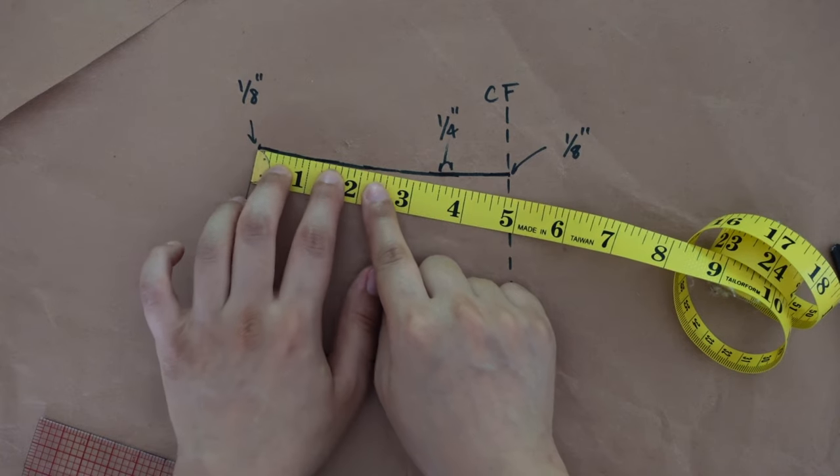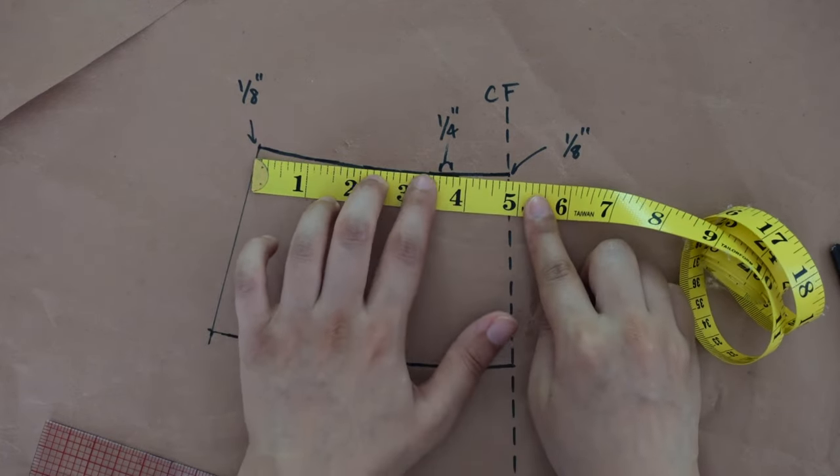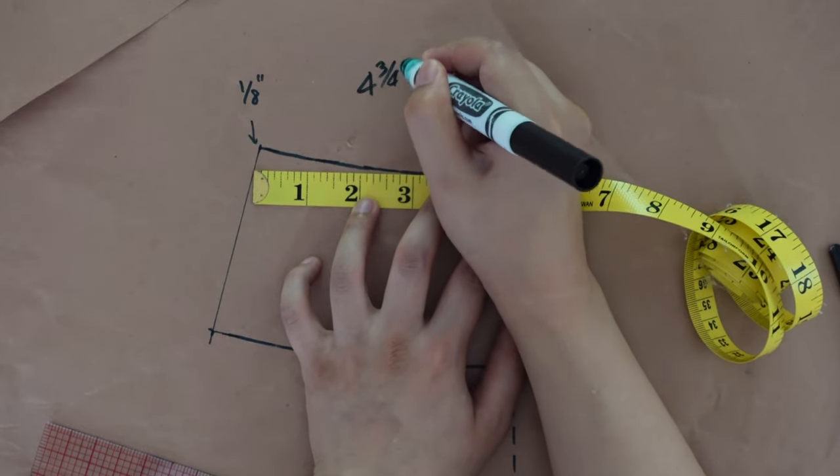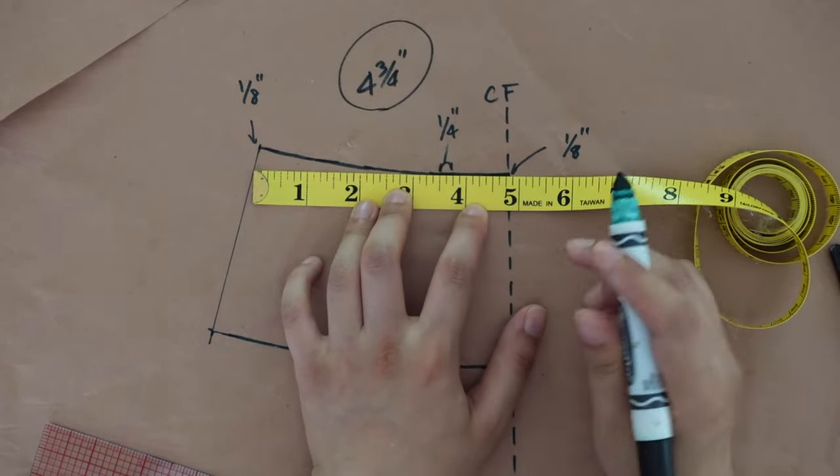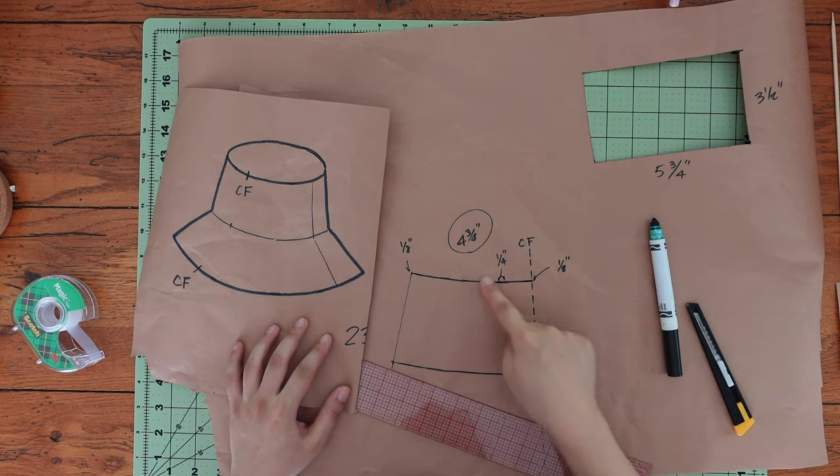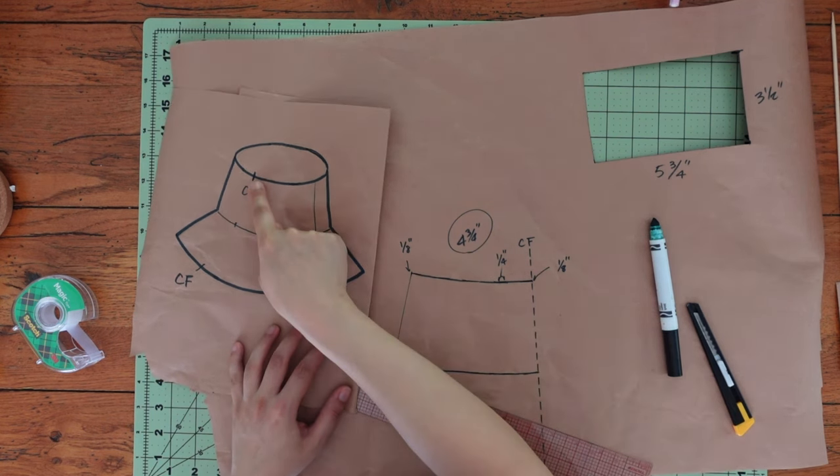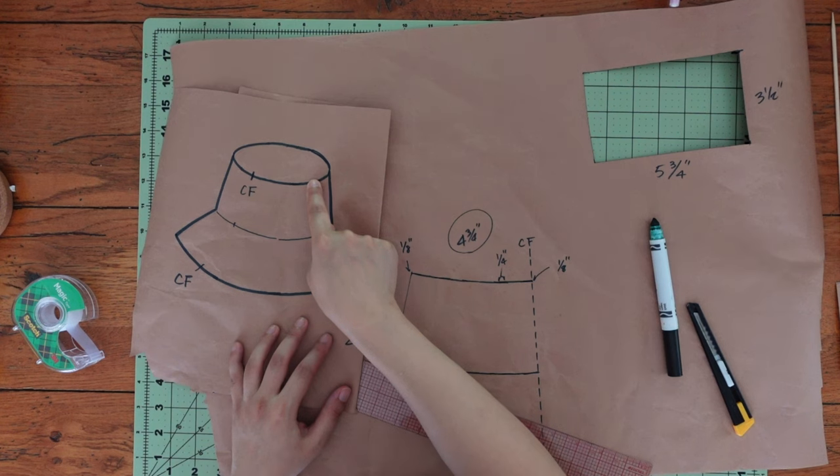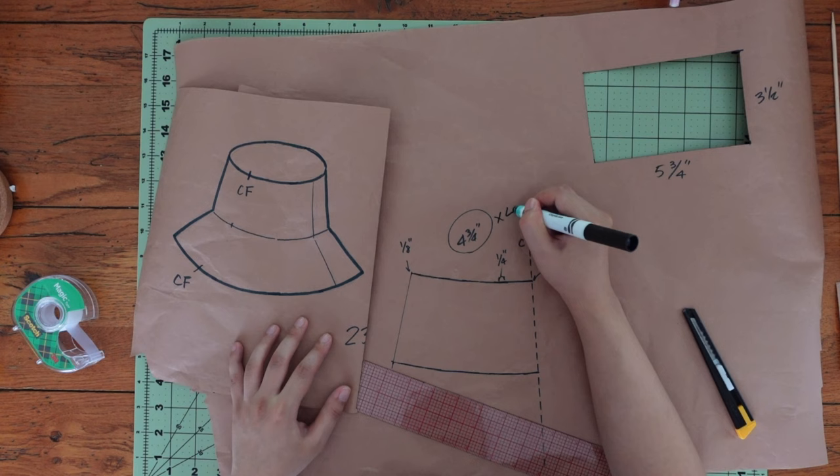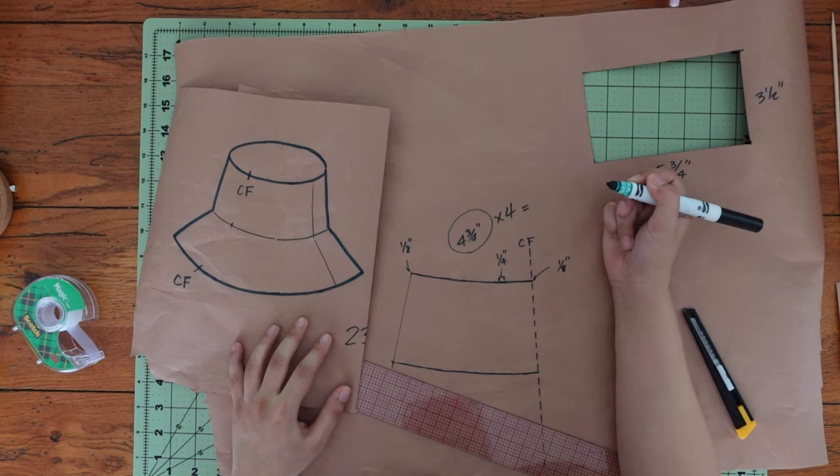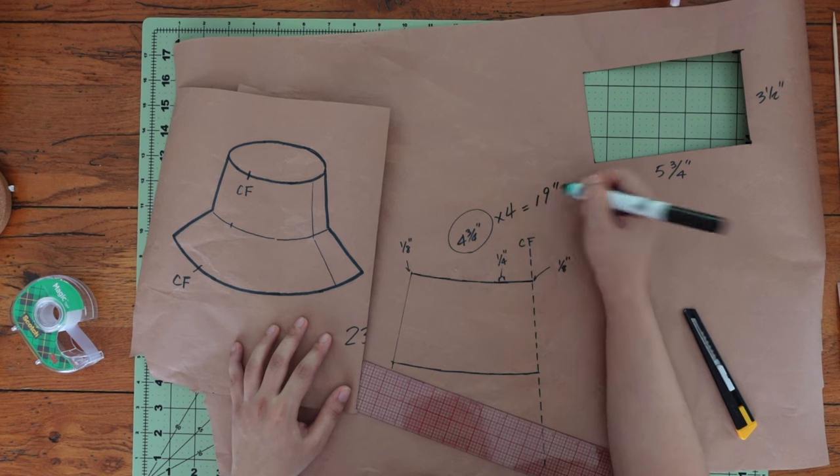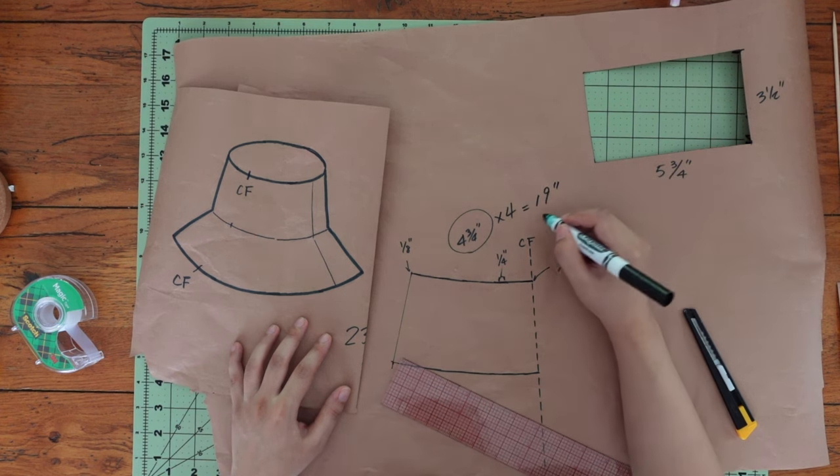Measure along the top edge of the crown. This came out to be four and three quarters. So this corresponds to this on this graphic. So we are going to multiply four and three quarters by four to get the circumference of the top of the crown, which came out to be 19 inches.